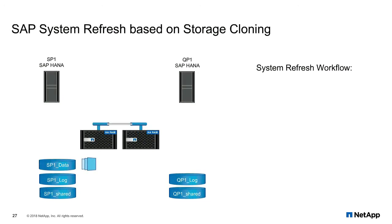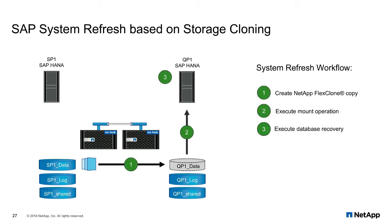Now let's have a look at a different approach for executing the system refresh operation. On the left side of this architecture picture we can see our source system for the refresh operation. As discussed in the backup and recovery section, storage snapshots have been created for this source database. The system on the right side is our target system. It has been installed once, so on the storage layer we have a shared file system and a volume for the database logs. The system refresh operation now consists of three main steps: first, a FlexClone copy is created on the storage layer based on a snapshot backup from the source system; the volume is then mounted at the target host; and with the third step, a database recovery is executed, which will also change the SID of the target database.